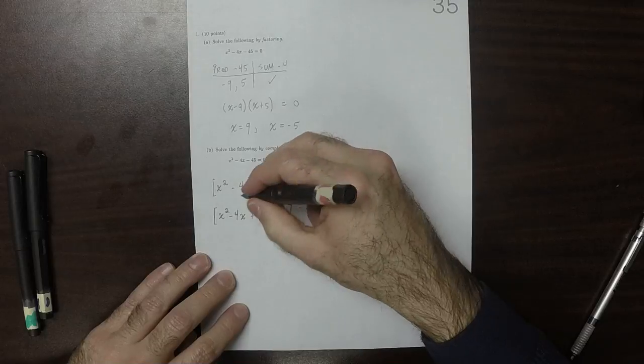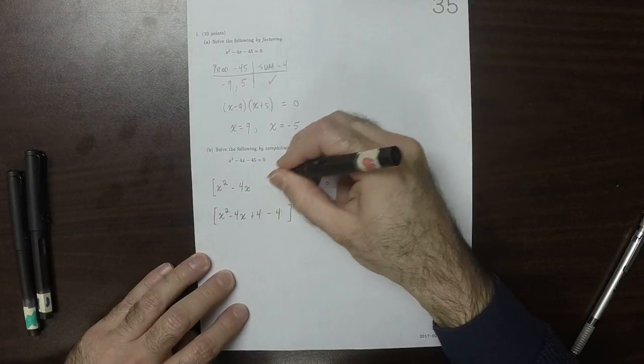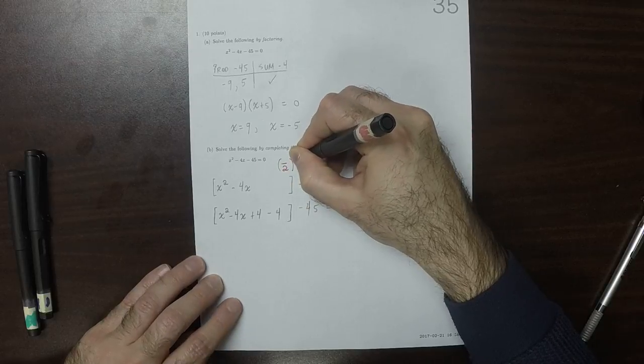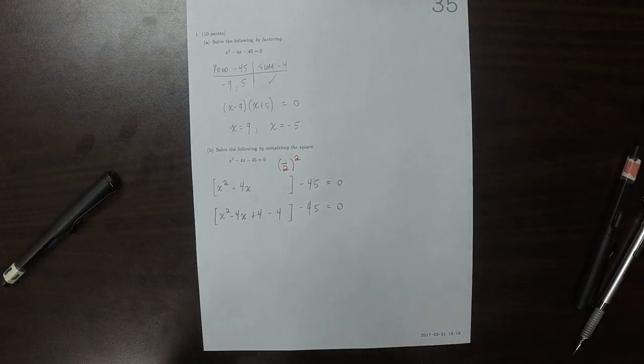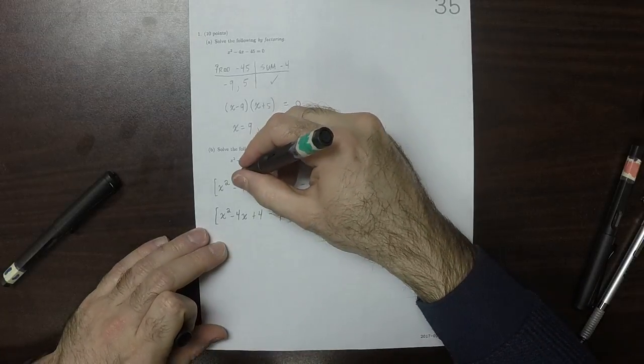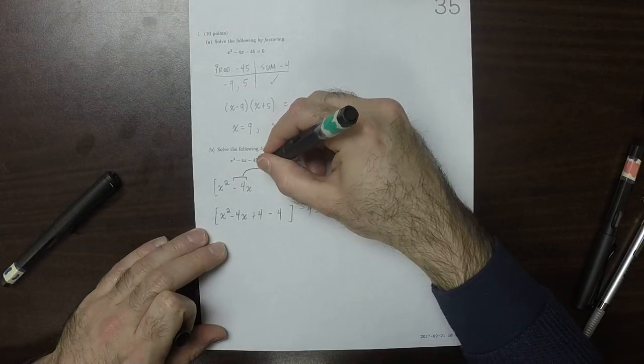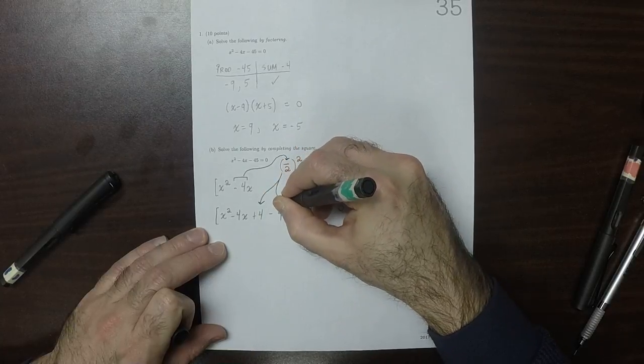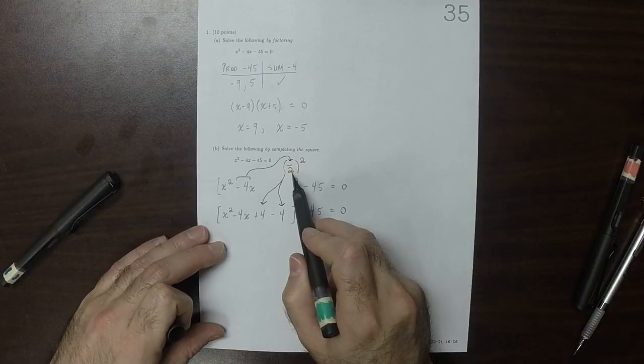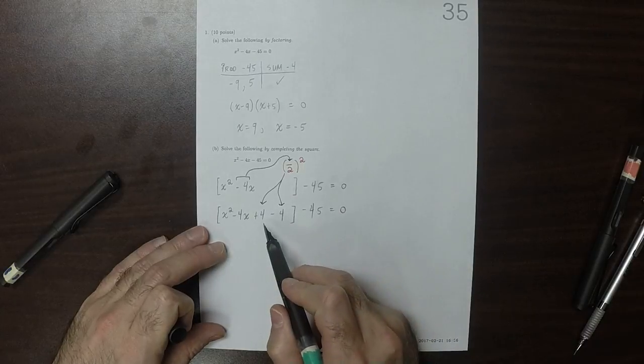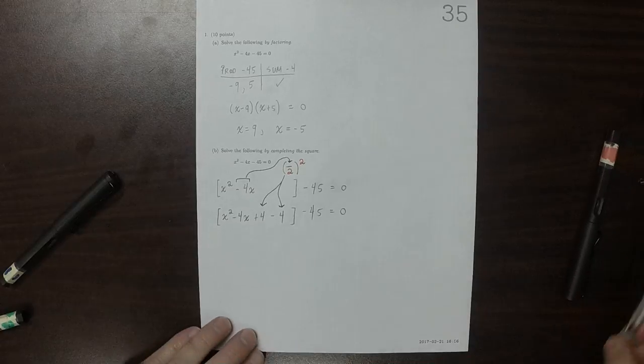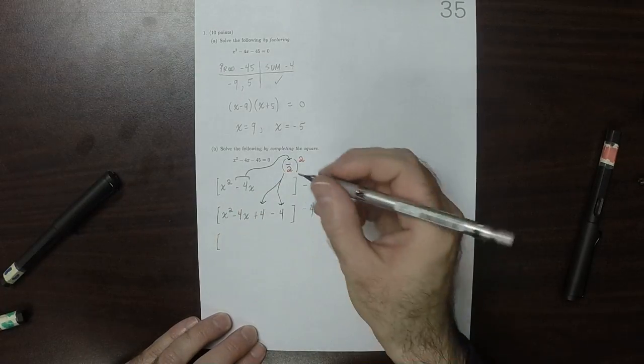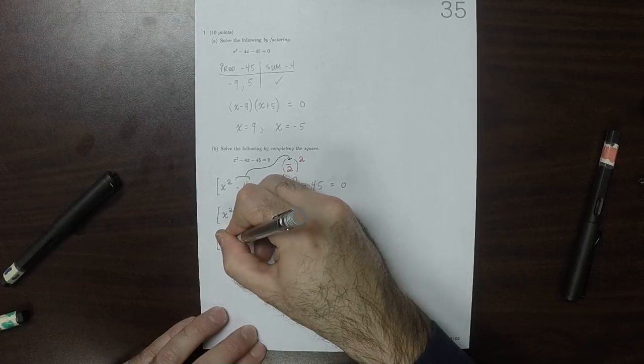And what this is, this is something over 2 squared. And the something is always this coefficient. Which is to say, negative 4 over 2 is negative 2 squared is positive 4. Add that much and then subtract.